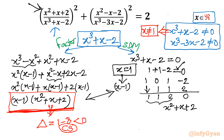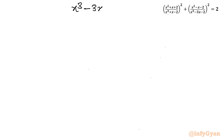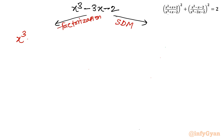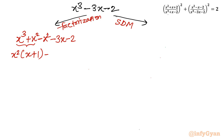Now we move to the second denominator x³ - 3x - 2. Again we use two methods. Method 1 — factorization: add and subtract x²: x³ + x² - x² - 3x - 2. From the first two terms take x² common, leaving x + 1. From the remaining terms, take minus common: -(x² + 3x + 2).